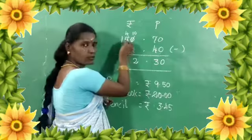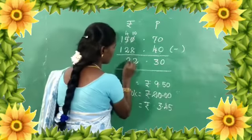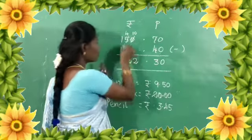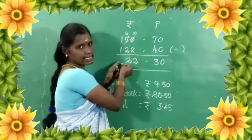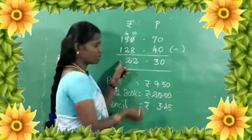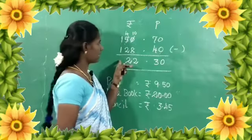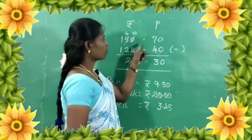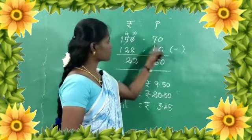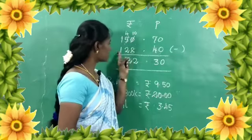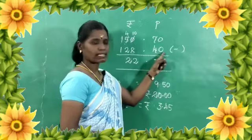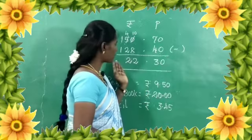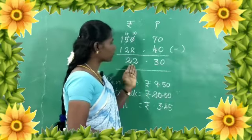Now there is 4. Subtracting 2 from 4 gives 2. Subtracting 1 from 1 is 0. That is the answer. If we subtract 75 from 150, we subtract 25 from 25.